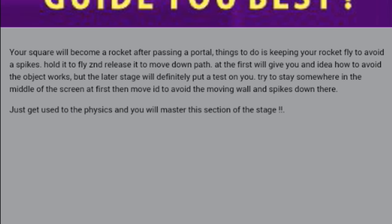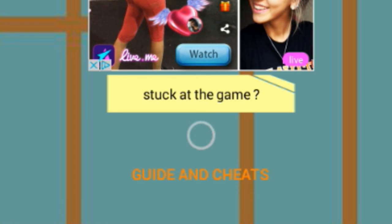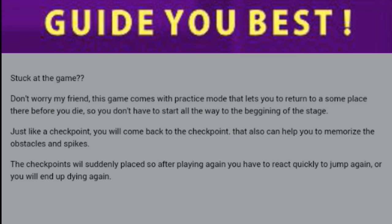'Your square will become a rocket after passing a portal. Things to do is keeping your rocket fly to avoid its spikes. Hold it by second. Release it down the path. At the first, we'll give you an idea how to avoid the object works, but the later stage will definitely put a test on you. Try to stay somewhere in the middle of the screen at first, but then move to avoid the moving wall and spikes down there. Stuck at the game? Don't worry, my friend. This game comes with Praxis mode that lets you to return to a someplace there before you die so you don't have to start all the way at the beginning of the stage. Just like a checkpoint, you will come back to the checkpoint.'